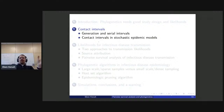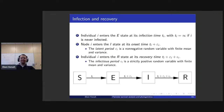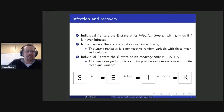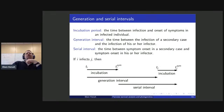Now I want to talk about contact intervals, starting with generation and serial intervals to fix terminology. People move from S to E to I to R — the infection time for person i is t_i, they have a latent period epsilon_i, and infectious period iota_i. So S to E at t_i, E to I at t_i plus epsilon_i, and I to R at t_i plus epsilon_i plus iota_i.